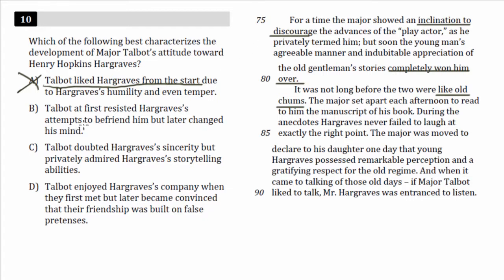Choice B: 'Talbot at first resisted Hargraves' attempts to befriend him, but later changed his mind.' This one works. So let's move on — we want to eliminate the wrong ones.